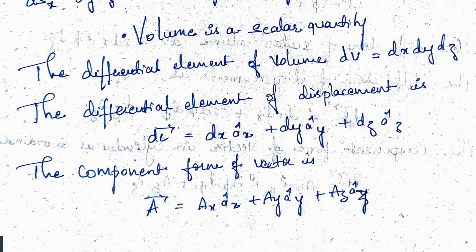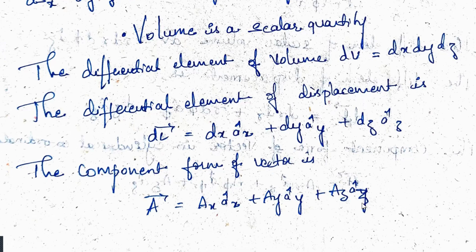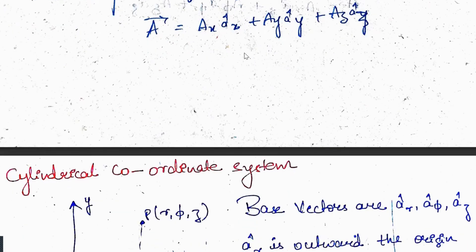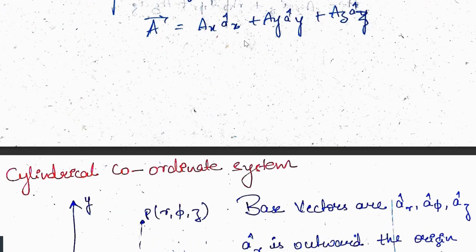The component vector form is: A = Ax·âx + Ay·ây + Az·âz. Note that capital A represents the constants and small â represents the unit vectors.